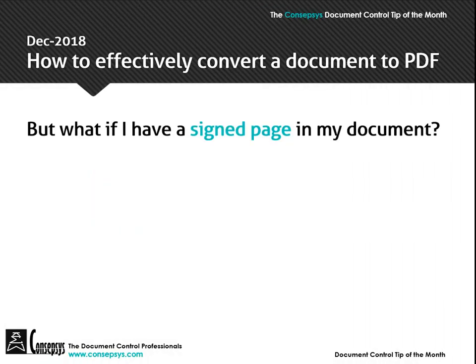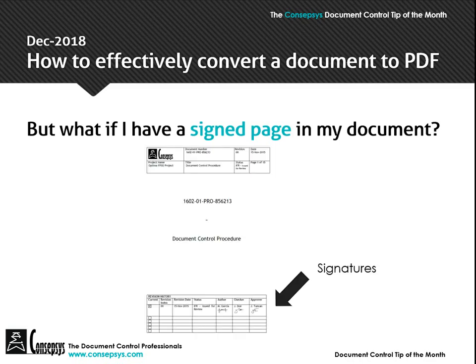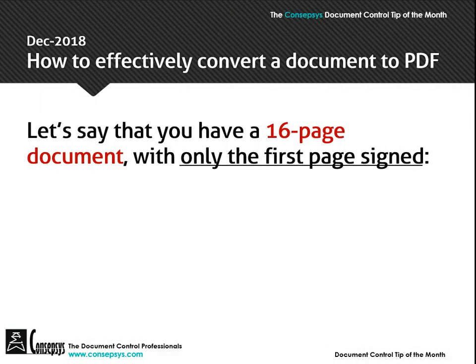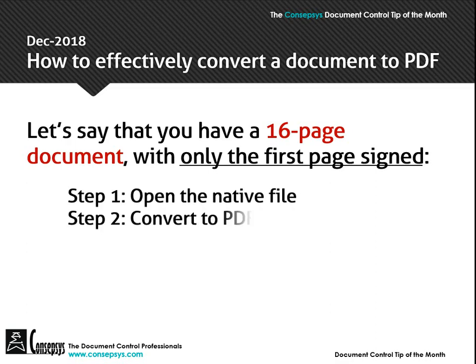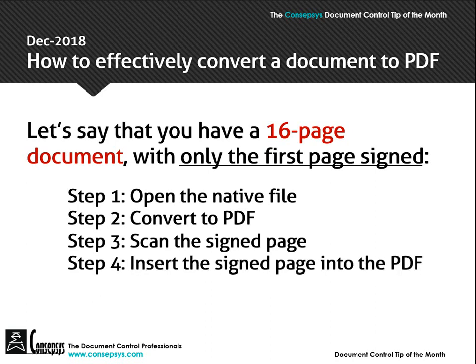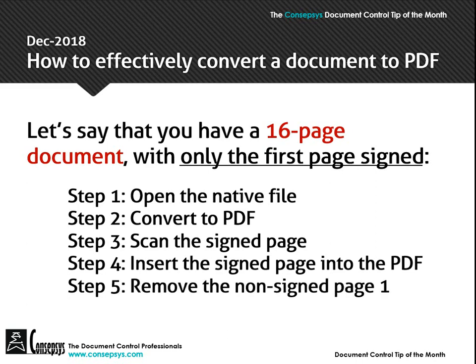But there is a specific case: what if you have a signed page in your document? For example, here we have the signed front page whereby the author, checker and approver have signed the document. Let's say you have a 16-page document with only the first page signed. Step 1: open the native file. Step 2: convert to PDF from the native software. Step 3: scan the signed page. Step 4: insert the signed page into the PDF. Step 5: remove the non-signed page 1.